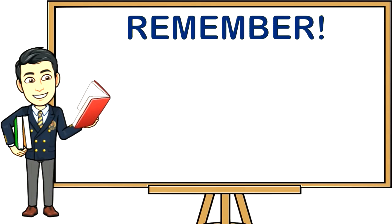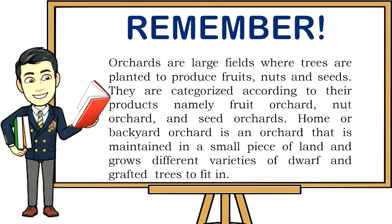Let's remember: orchards are large fields where trees are planted to produce fruits, nuts, and seeds. They are categorized according to their products, namely fruit orchard, nut orchard, and seed orchard. A home or backyard orchard is maintained in a small piece of land and grows different varieties of dwarf and grafted trees to fit in the space.